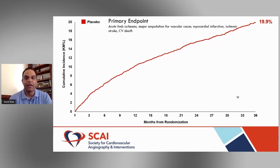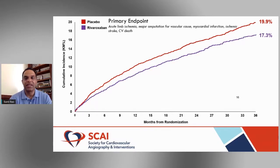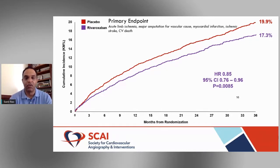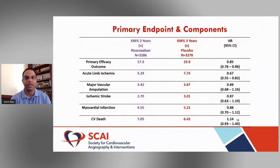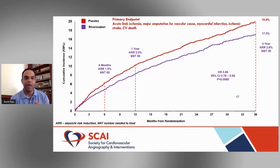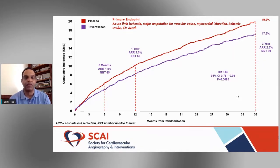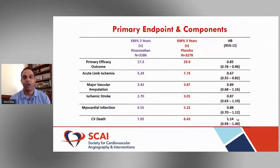There was a very significant reduction — over 2% absolute reduction — in the primary endpoint with the addition of low-dose rivaroxaban to background therapy. There was a 15% relative risk reduction overall. Importantly, the curves kept diverging — the benefit was early and continued to increase over time. The number needed to treat was only 39 to prevent one primary endpoint event.